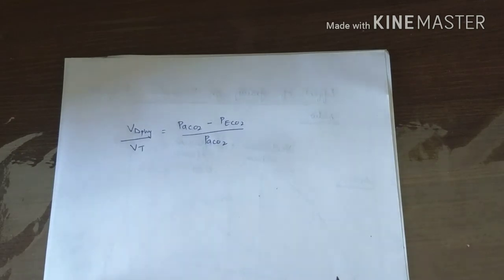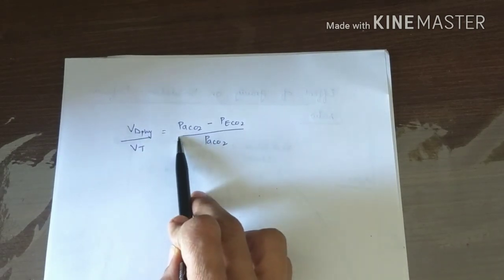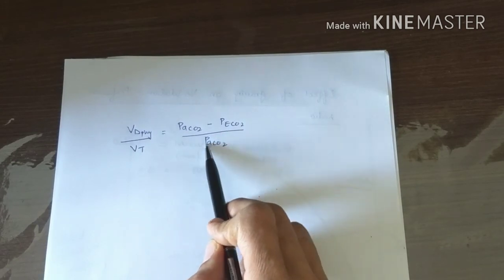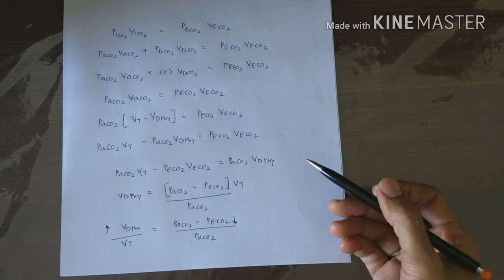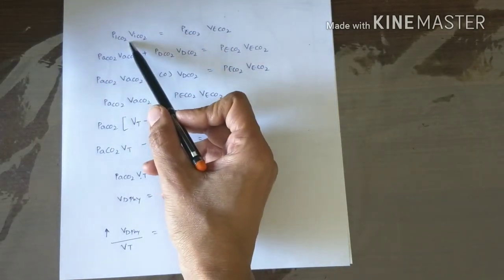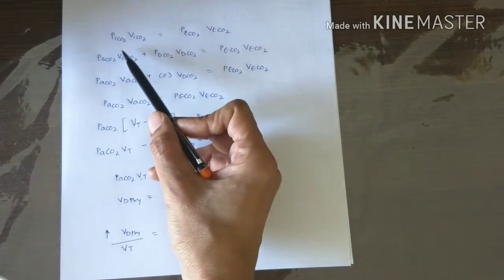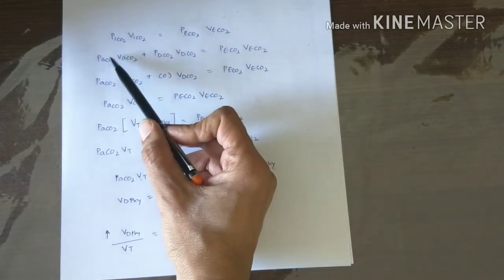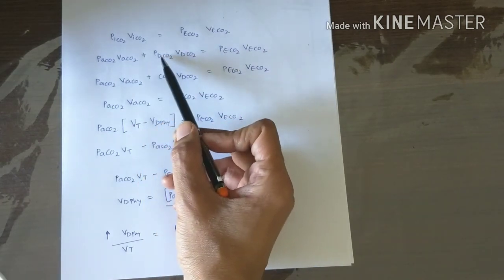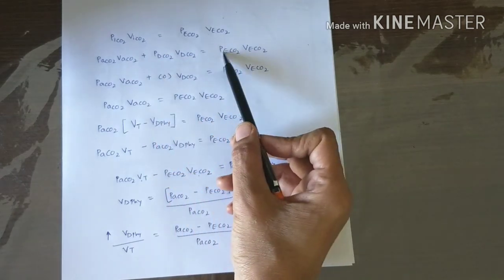Physiological dead space is measured using Bohr's equation: physiological dead space divided by tidal volume equals (partial pressure of CO₂ in alveolar air minus partial pressure of CO₂ in expired air) divided by partial pressure of CO₂ in alveolar air. This comes from PV = constant: partial pressure and volume of CO₂ in inspired air equals that in expired air, which is divided into alveolar air and dead space air components — 150 mL dead space and 350 mL going to alveoli.